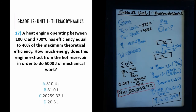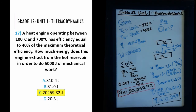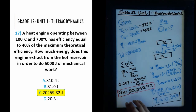Looking at our choices, the closest value is Choice C: 20,259.32 joules. It's close to our calculated answer. The other choices — 810, 81 — are nothing remotely close to this number, so there's no ambiguity. And that's how you answer the question.